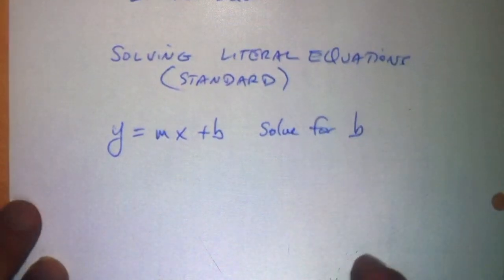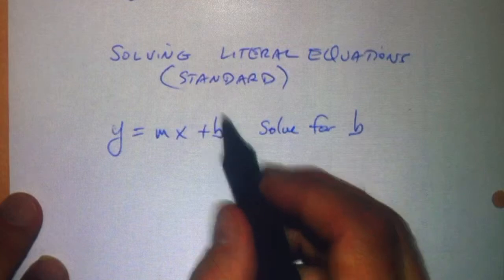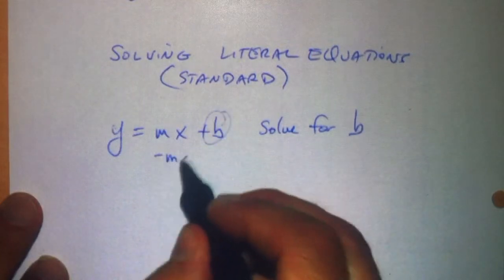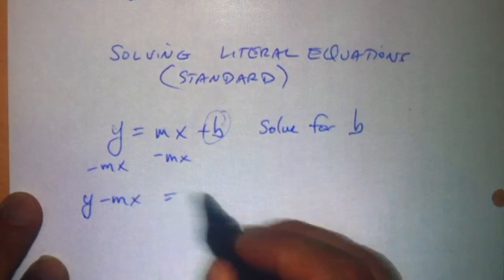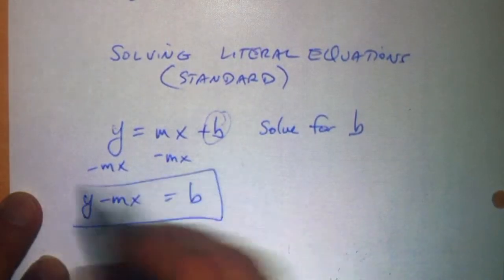That one's relatively easy because we circle the b and subtract mx on both sides, and we get y minus mx equals b. That's our answer. There's nothing more to it.